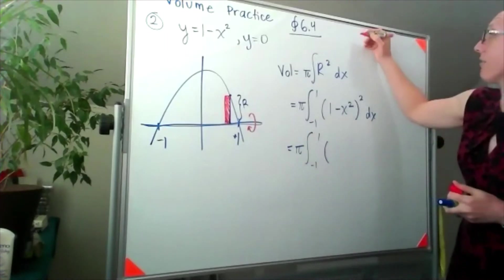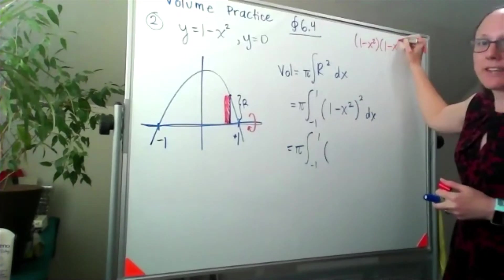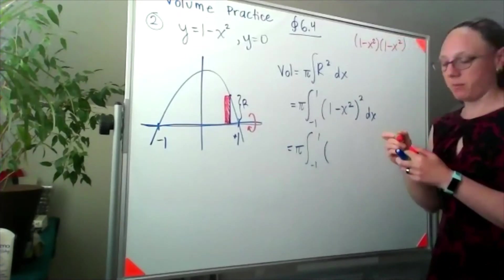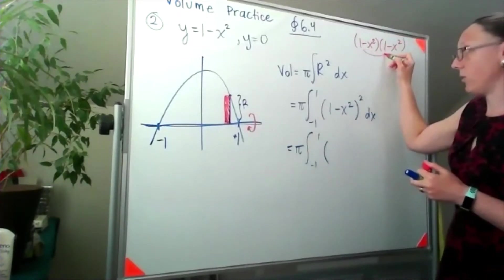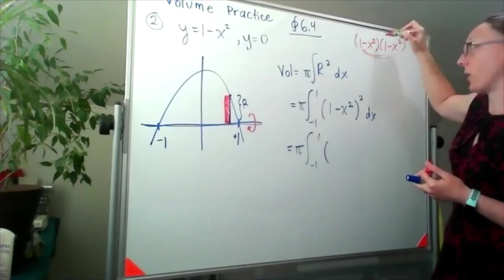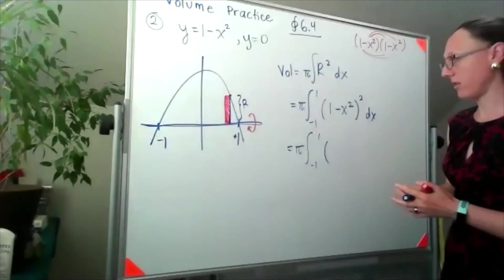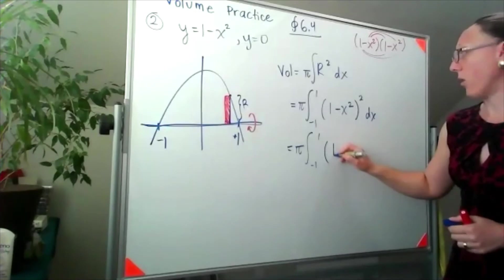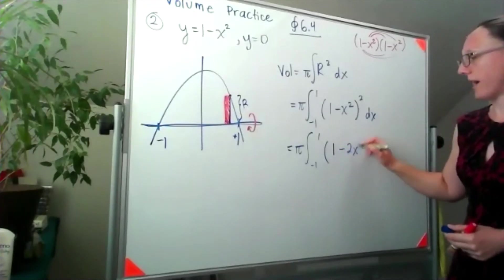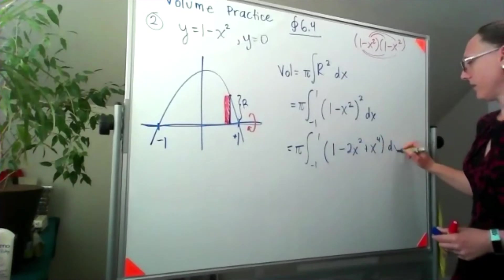So I'm going to have 1 minus x squared times another 1 minus x squared, and if I think about multiplying that out, I'll have 1 squared or 1, a negative x squared, another negative x squared, and a positive x to the fourth. So I'm looking at 1 minus 2x squared plus x to the fourth dx.